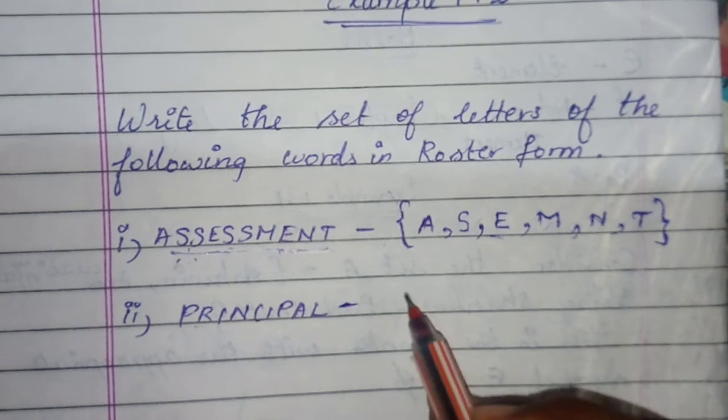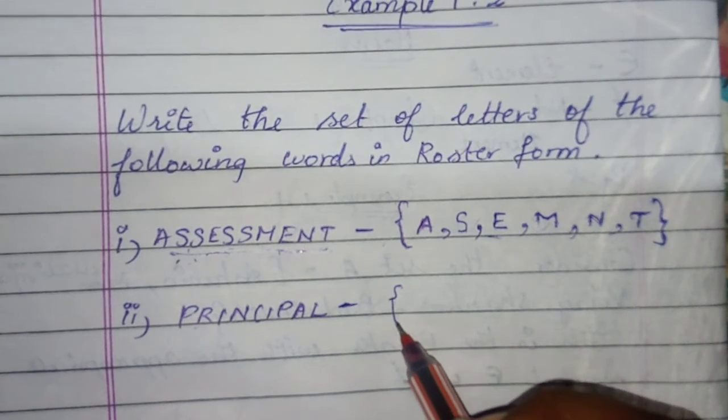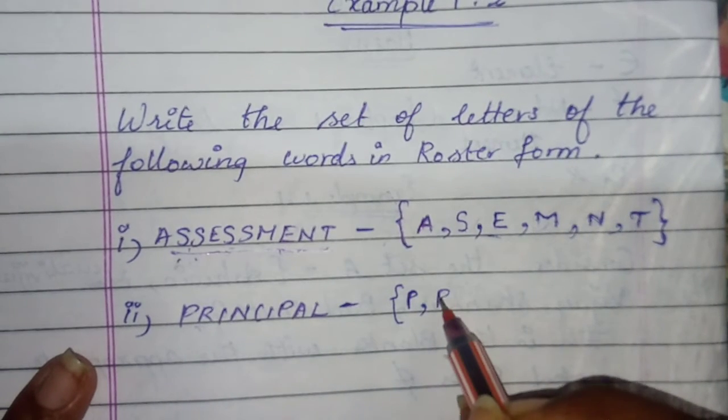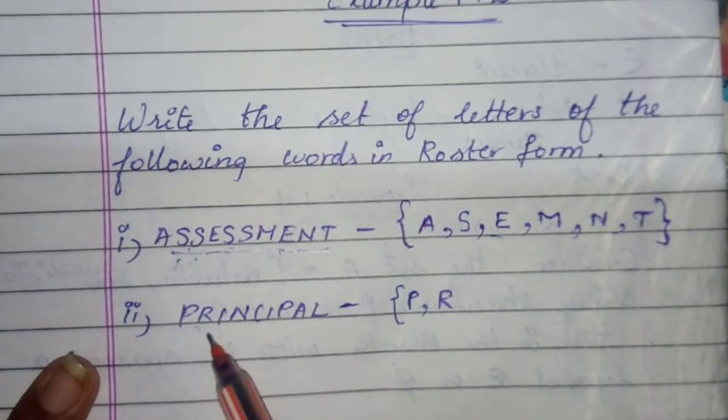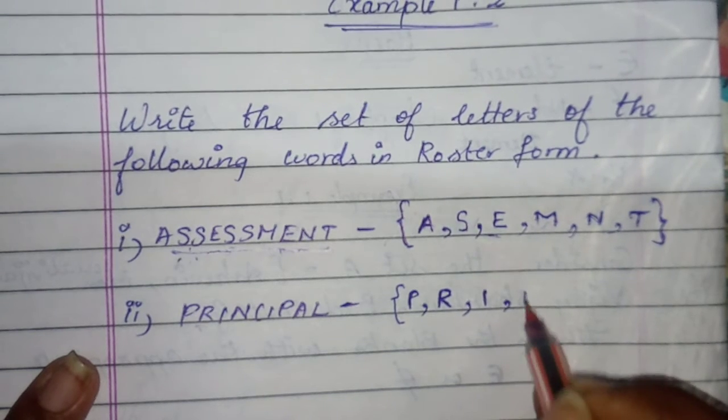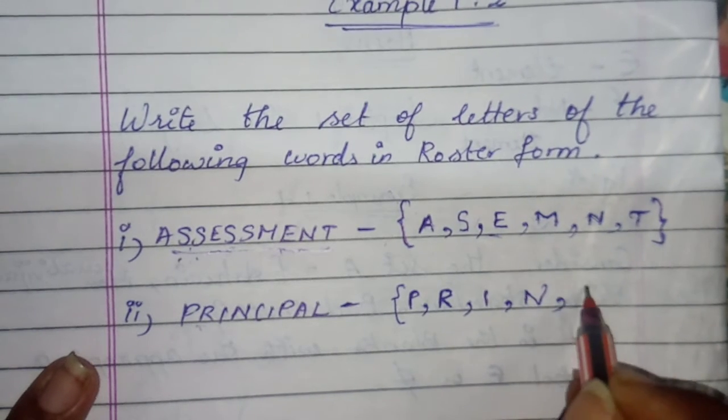P. Start with curly bracket. P. Then R. R is not repeated, so we can write it. Then I. Then N. Then C.